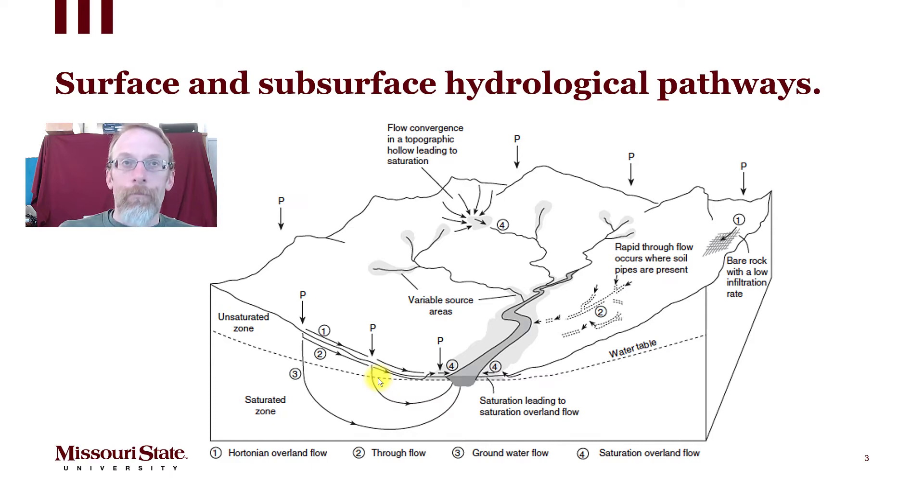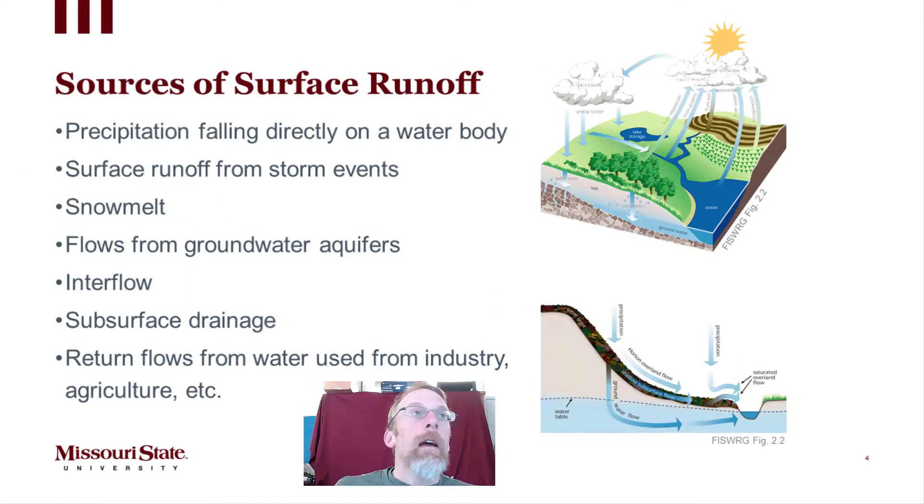So the sources of surface runoff, once again this is review: precipitation storm events, snow melt, flows from groundwater and aquifers, interflow through the soil, subsurface drainage to the soil, and then anthropogenic inputs would be return flows from water used in industry, agriculture, etc.